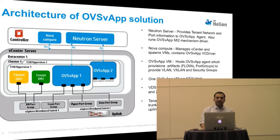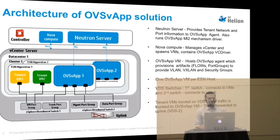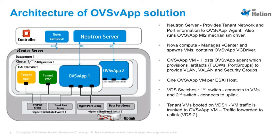This is a typical architecture for the OVSVF solution. We have a Neutron server and Nova compute. As mentioned, it's a service VM running on every ESXi hypervisor in a vCenter. In the diagram, you can see that the Neutron server provides a set of APIs to create networks and ports for a tenant. For that, we have a thin mechanism driver running inside the Neutron server, and as part of Nova compute code, we have a customized OVSVF Nova VC driver which will spawn the VM and handle networking.